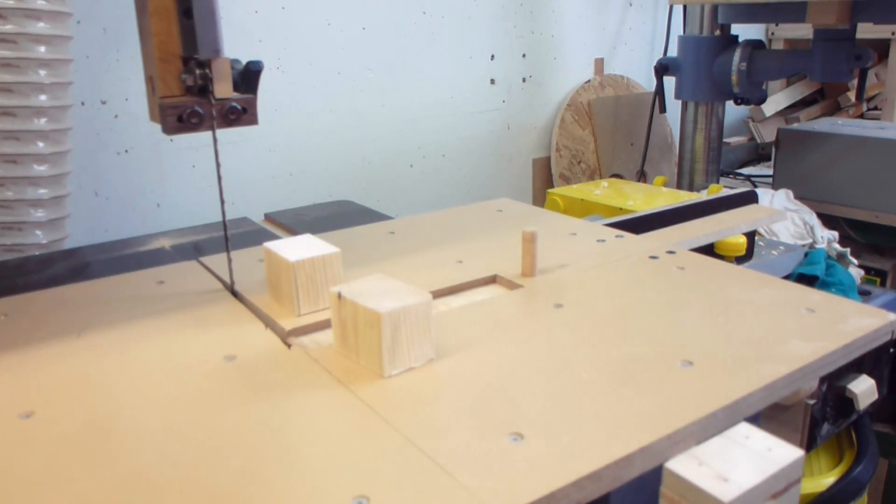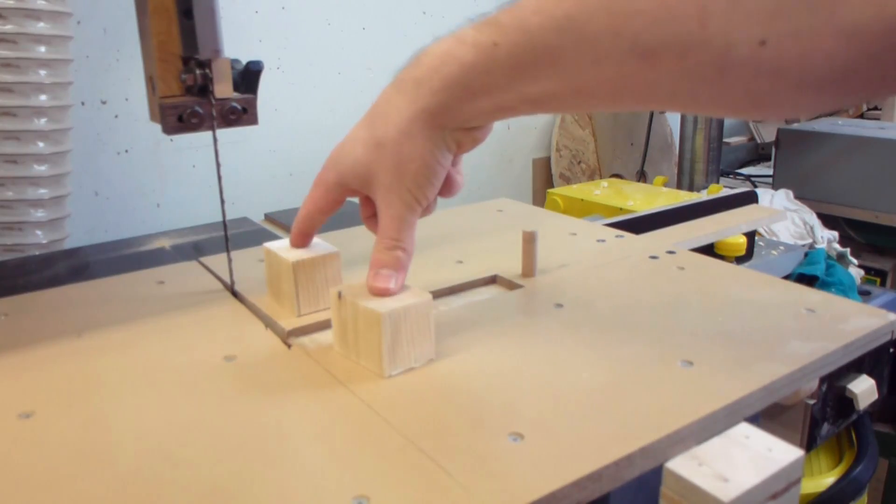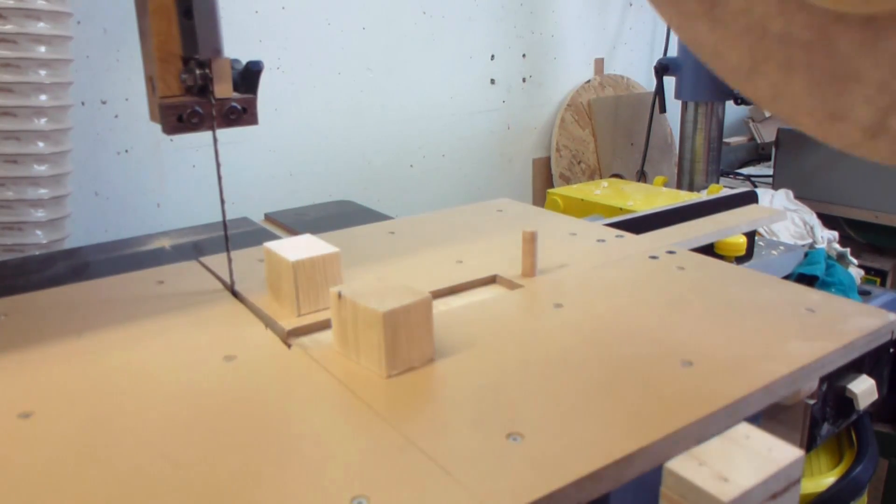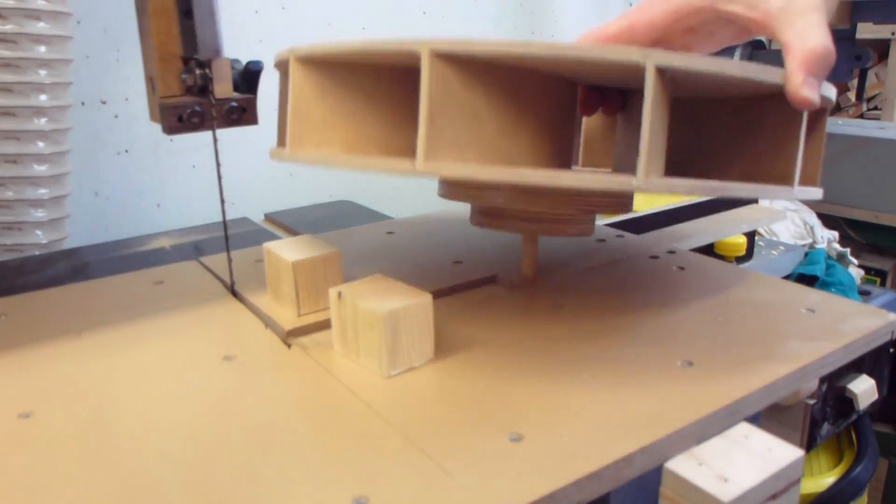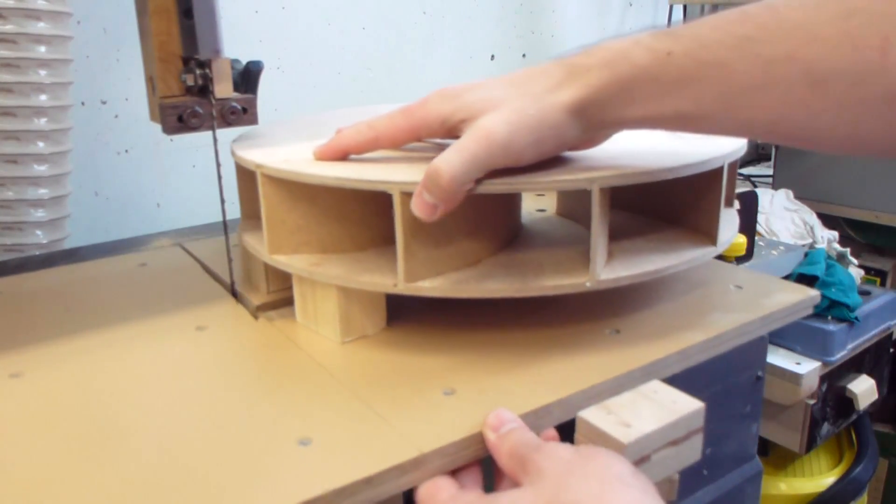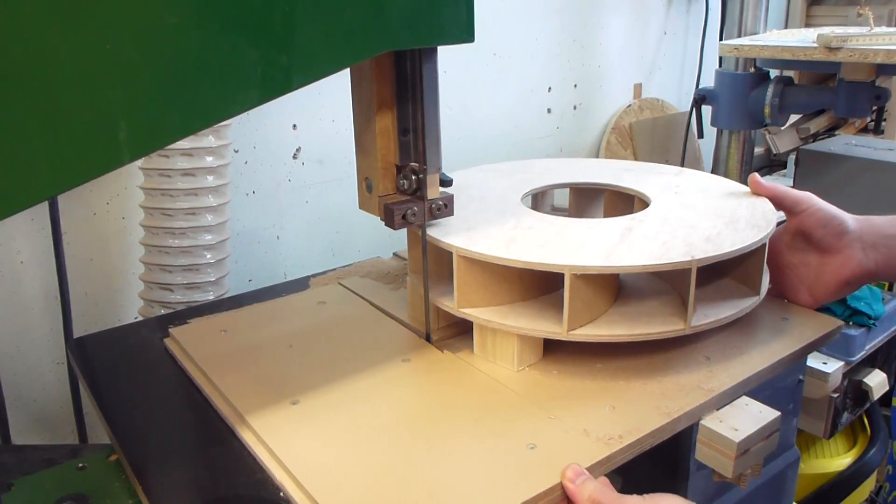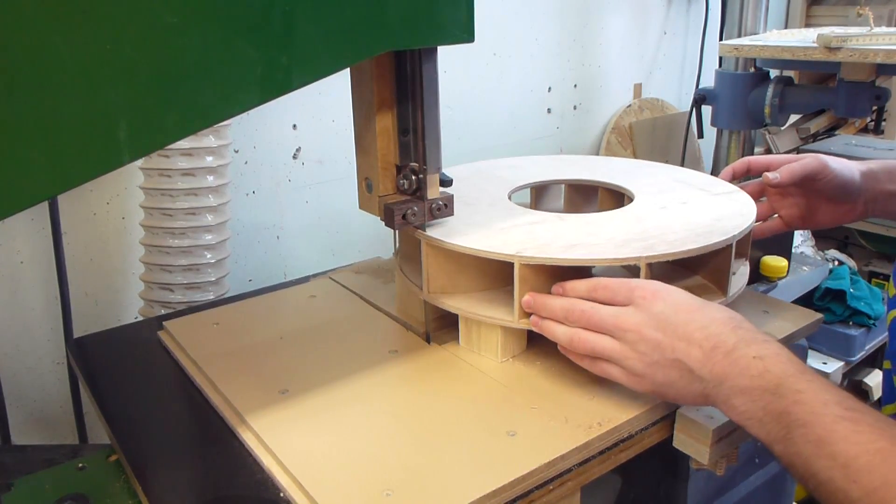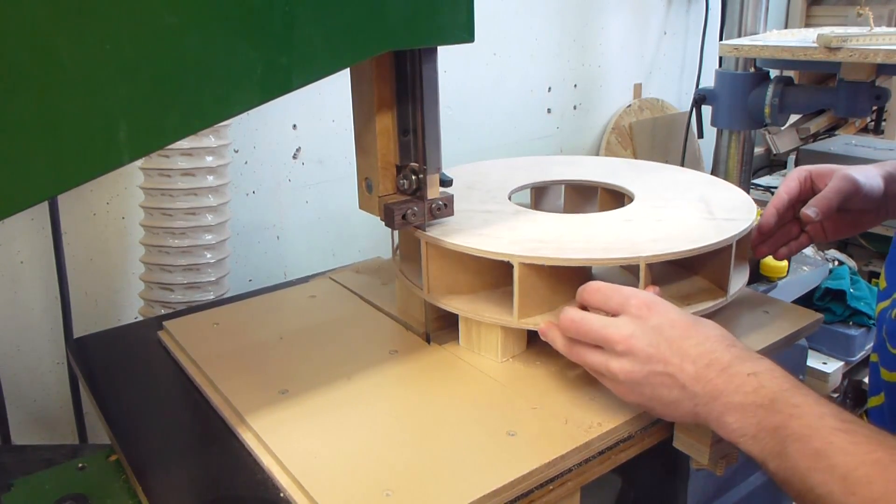I make it smaller with the bandsaw circle jig - here I have the pivot point. These two double sided taped pieces maintain the spacing and with this setup I can now easily cut it smaller. This also results in really interesting offcut pieces.